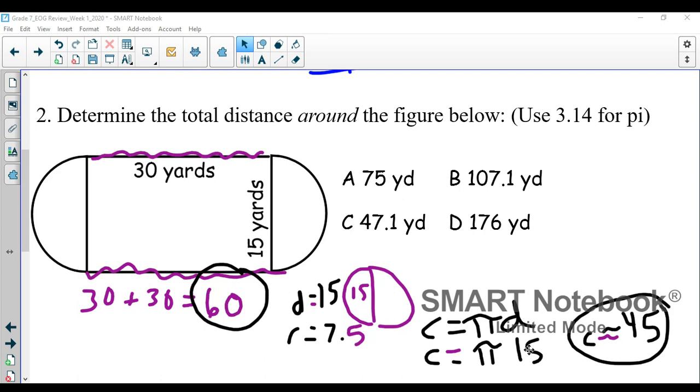Now if you didn't have a calculator and could use 3.14, I just kind of estimated pi to be about 3, because it is about 3.